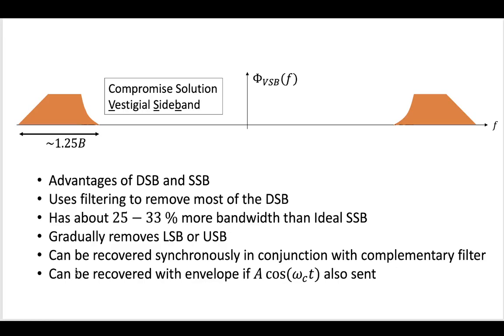So what are the advantages? So this vestigial sideband has the advantages of DSBSC and single sideband. You're able to use filtering to remove most of the double sideband. So we're able to remove most of what was here. It has only about 25% to 30% more bandwidth than our ideal single sideband, and it gradually removes, using some kind of gradual filter, the lower or upper sideband.